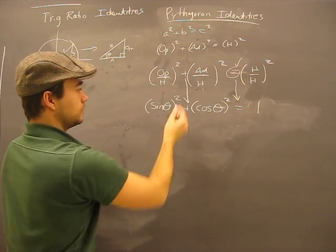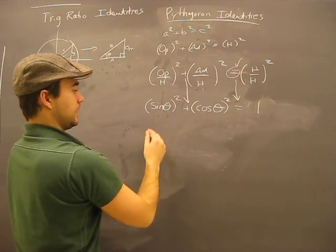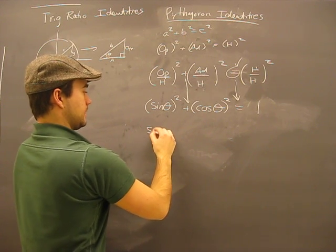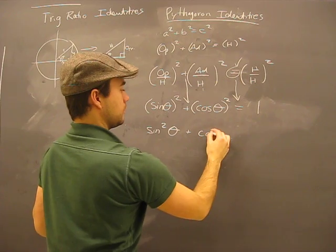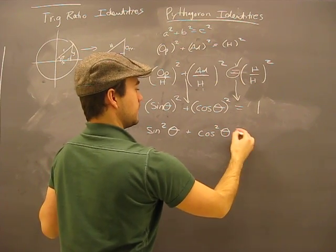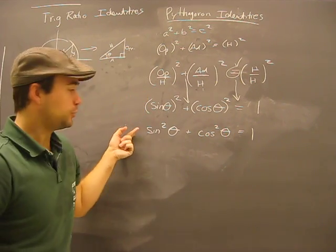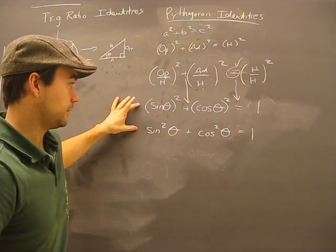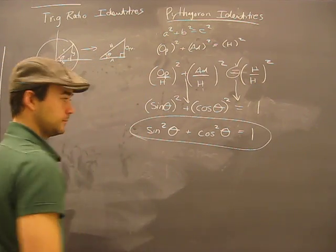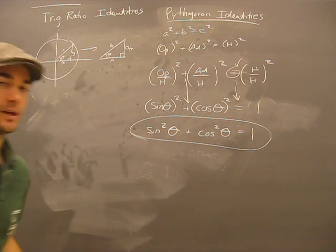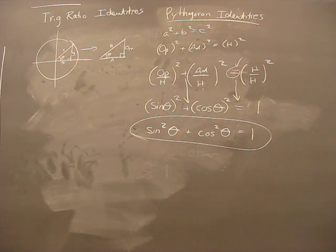Another way to write this, you will see theta on the outside here, is this: sin²θ + cos²θ = 1. Be familiar that these are the same thing, just a different way to write it. Okay, but here you go, just that easy. Okay, the next video I'm going to show you how to maneuver this equation around a little bit.